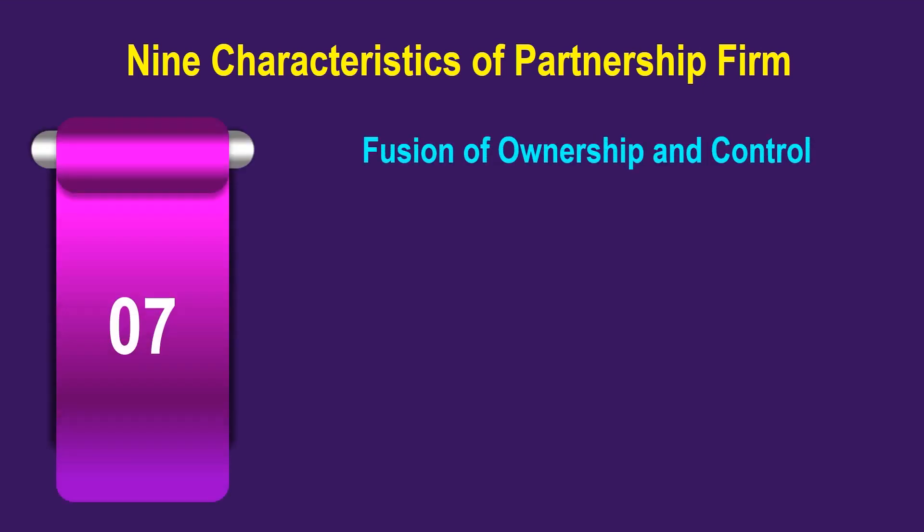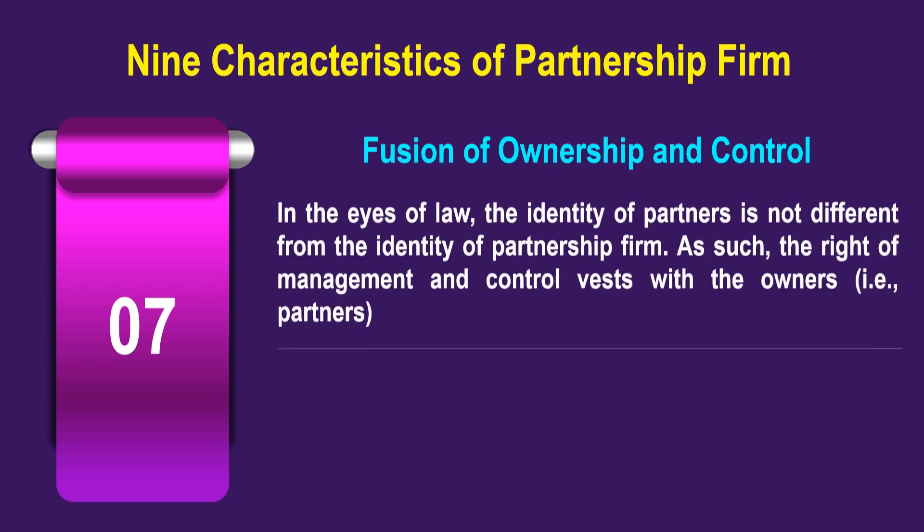The seventh characteristic is the fusion of ownership and control. In the eyes of law, the identity of the partners is not different from the identity of the partnership firm. As such, the rights of management and control vest with the owners, that is, the partners.